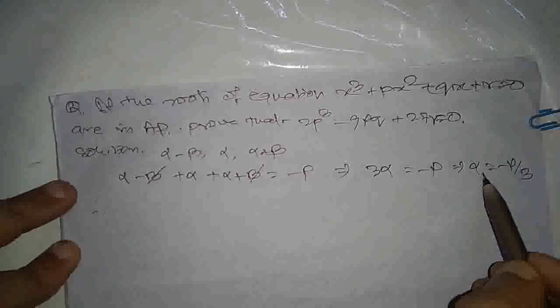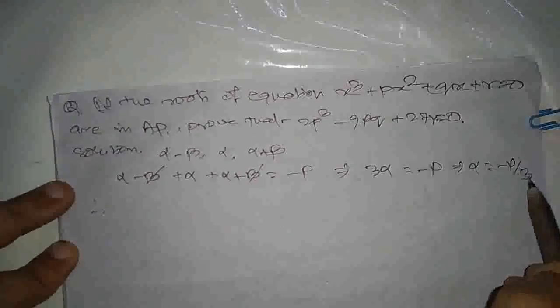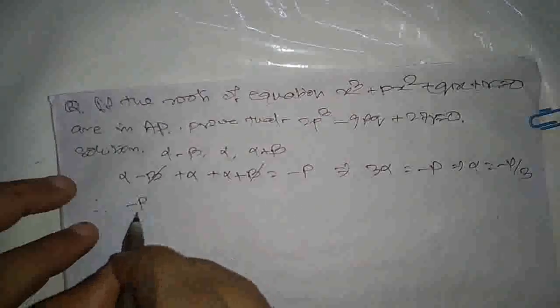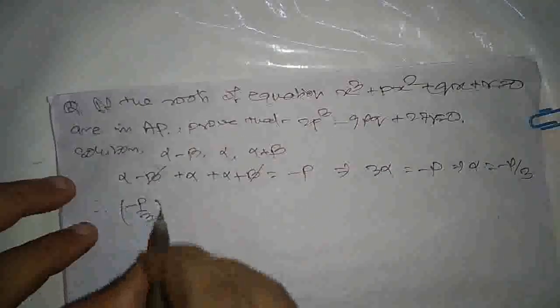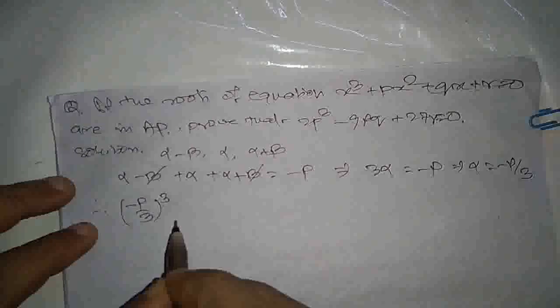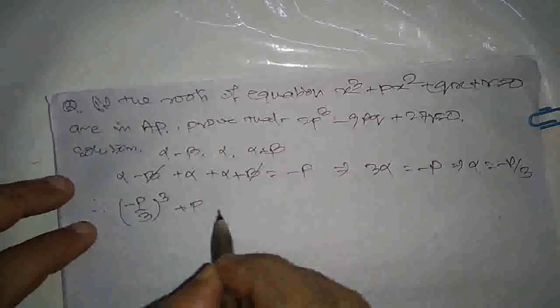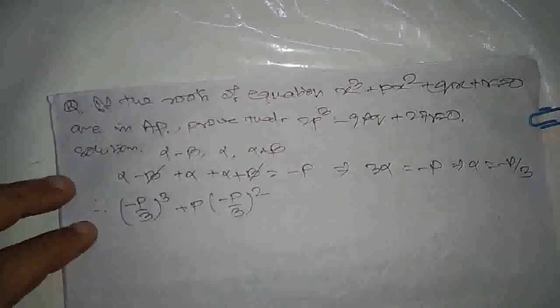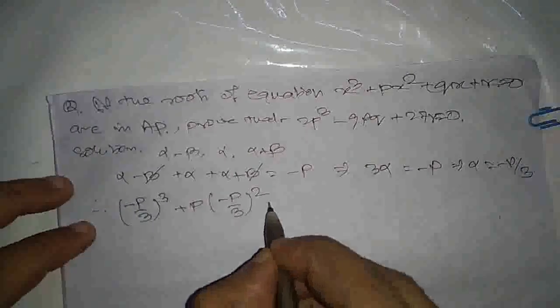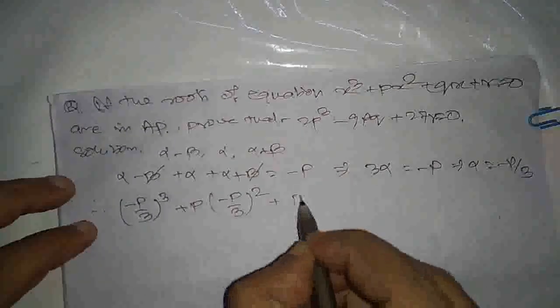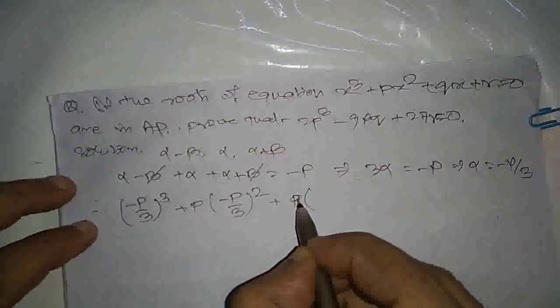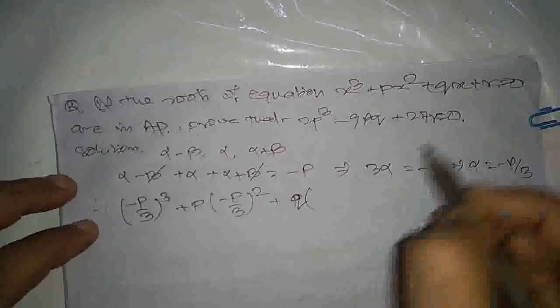x ki jagah par minus p by 3 rakhne par: (minus p by 3)³ plus p times (minus p by 3)² plus q times x... sorry, plus q into minus p by 3